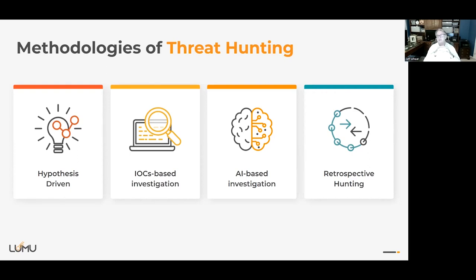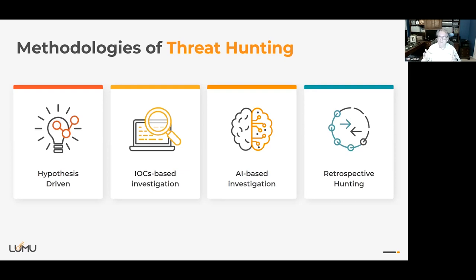Next is IOC-based investigations — indicator of compromise investigations. Something bad happened at a location; you shouldn't go there. It's either the bad guys who own it or someone else's location they've pwned. You can't have insight into whether they corrected whatever deficiencies allowed the bad guys to use them as a conduit for bad activity. If you don't have a business reason to go there, you just shouldn't. Once a crack house, always a crack house — nothing good ever happens at those locations. You're looking to see: am I talking to any bad locations, am I talking to anyone on the no-fly list?